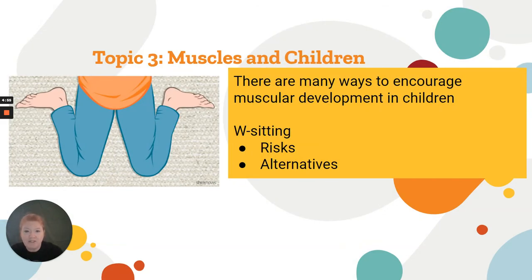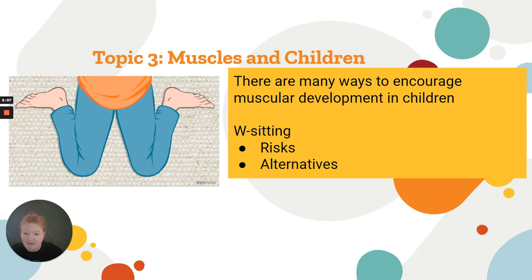There are lots of ways to encourage muscular development in children: letting children get dressed by themselves including tying their shoes, letting them feed themselves, letting them help with cooking, playing with them, being active, sports, scissors, cutting, drawing, and tummy time — whole bunches of ways to encourage muscular development in children.